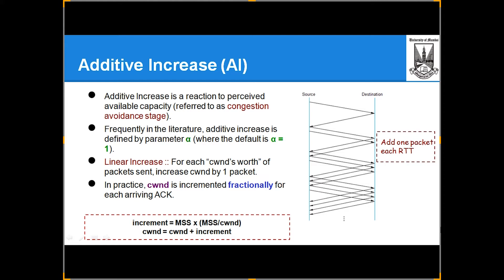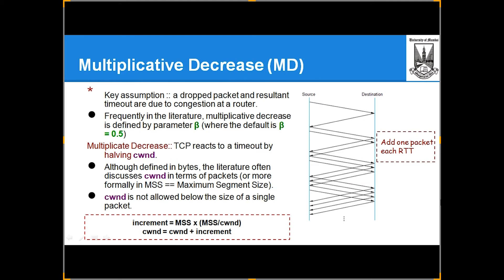For each congestion window's worth of packets sent, increase the congestion window by one packet. You keep increasing until there is a failure, then you decrease. In practice, the congestion window is increased fractionally for each arriving acknowledgement. You send one packet, receive the acknowledgement, then send two packets. The moment there is a failure in sending and receiving, you go back to the original default size.